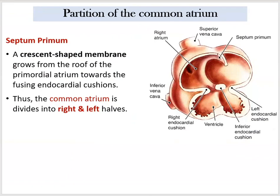Before talking about defects, I want to give a couple of minutes about the formation of the interatrial system. I'll start with defects in the septa — we have the right atrium and left atrium with a septum between them known as the interatrial septum, and we have two ventricles with another septum known as the interventricular septum. Let us simplify the interatrial septum, because we have two atria open on each other.